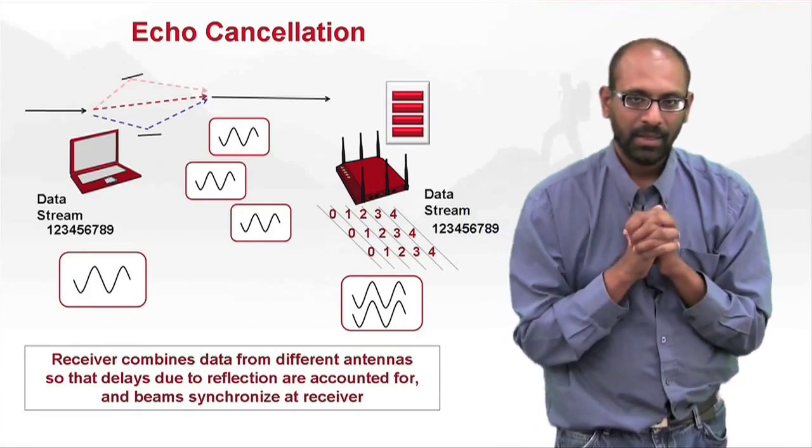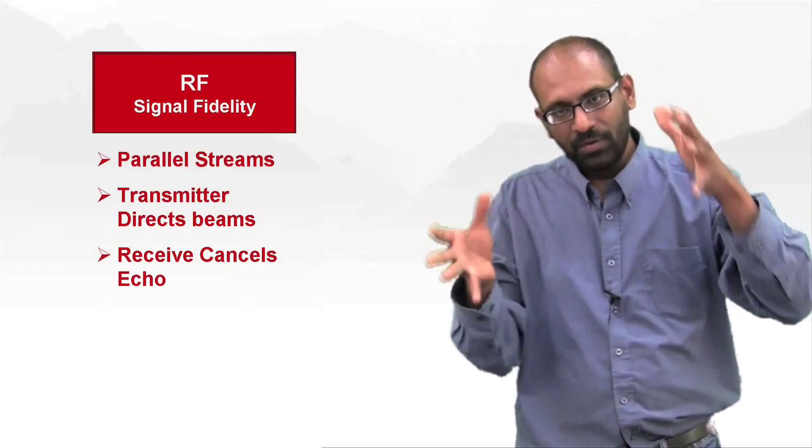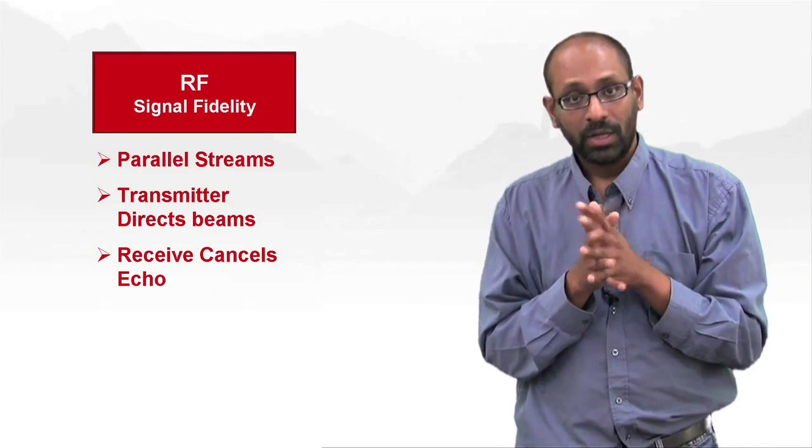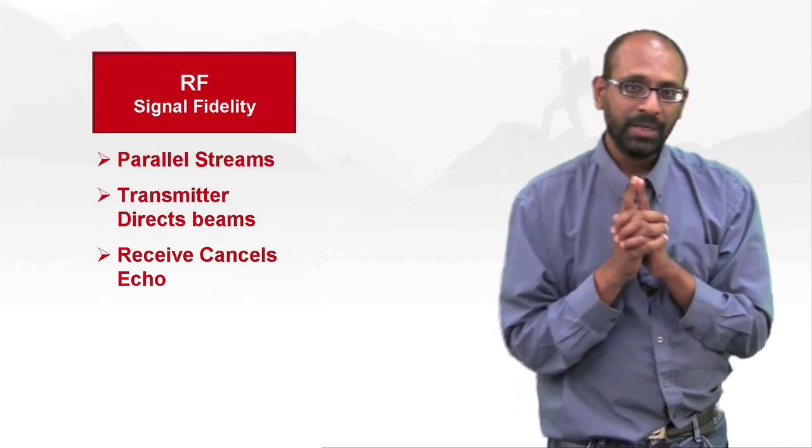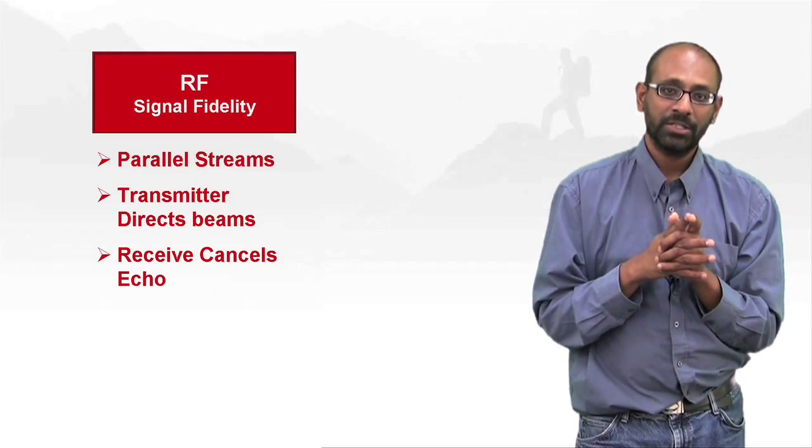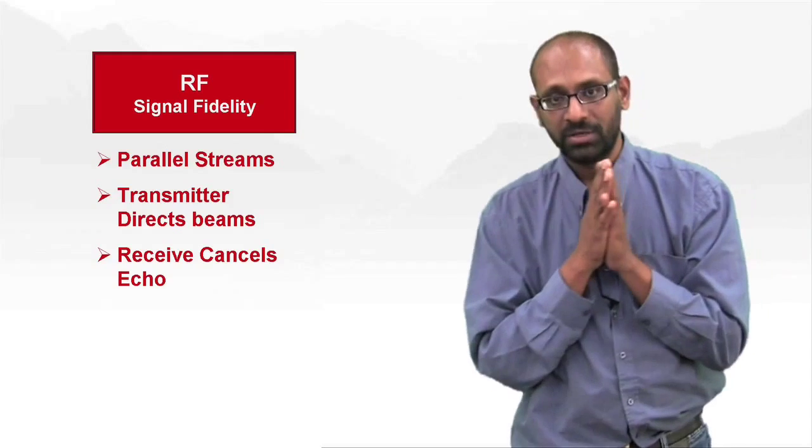Okay, so now let's step back and see what the three mechanisms were. The first is, for a given amount of RF usage, rather than send one stream, you send parallel streams. The second is, the transmitter tries to waste minimum amount of energy, and rather than sending beams everywhere, it focuses them towards the receiver.